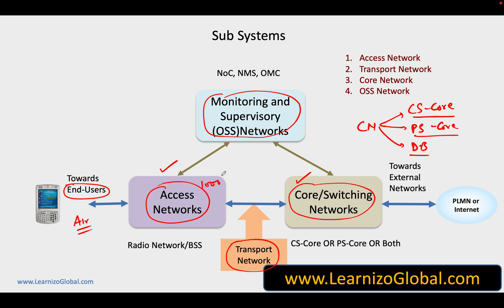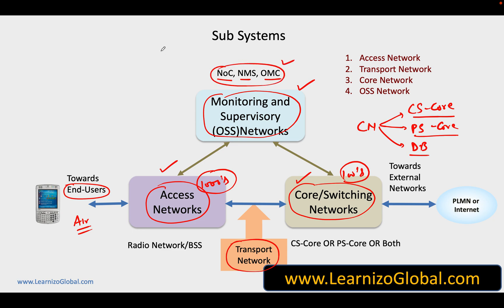We have thousands of devices in the access network and hundreds in the core, and all these devices cannot be maintained or managed locally. So for that we have some centralized stations where we monitor and supervise our networks. These monitoring stations are referred to as Network Operation Center, Global Network Operation Center, NMS, or Operation and Maintenance Center.